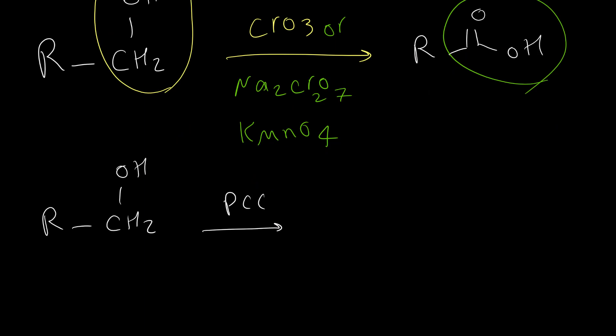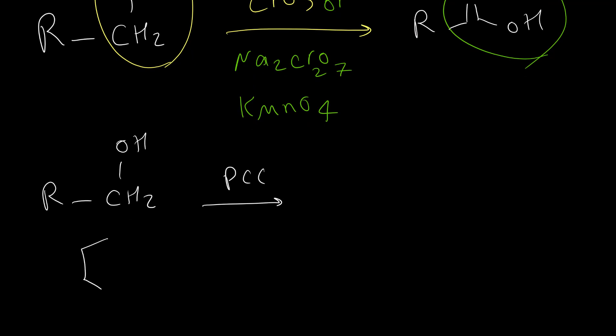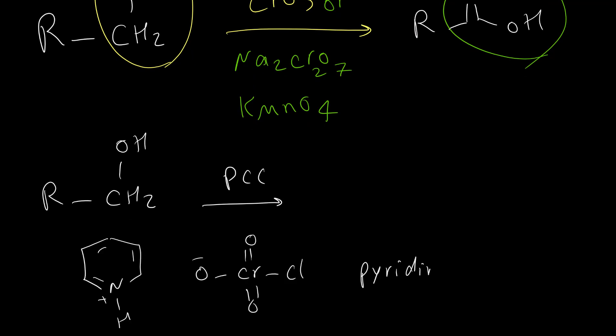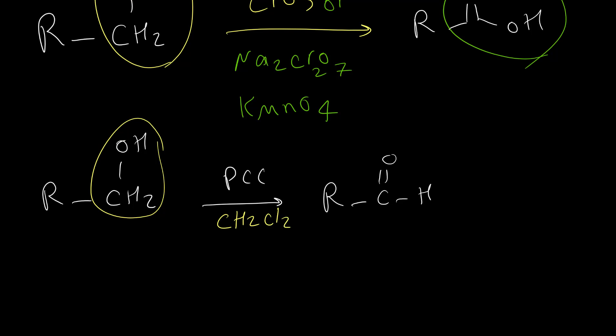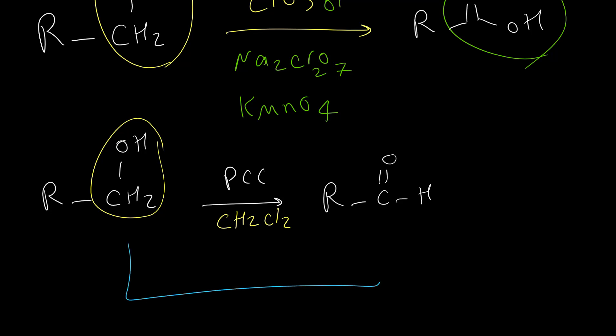But if we use PCC, it is a mild oxidizing agent. Its full name is pyridinium chlorochromate, abbreviated PCC. PCC is mild and can only oxidize primary alcohol to an aldehyde — normally the solvent for PCC is dichloromethane. Similarly, DMP — whose full name is Dess–Martin periodinane — gives the same result. Either DMP or PCC will only oxidize primary alcohol to aldehyde and will not proceed to carboxylic acid.